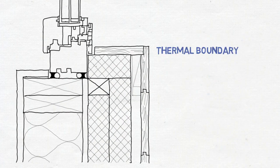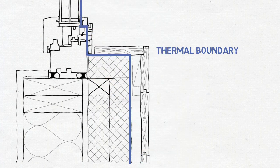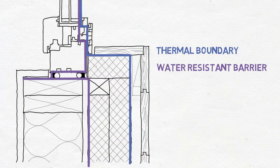The thermal boundary starts with the exterior insulation and goes across the window. The water resistant barrier is installed on the opening behind the exterior insulation and continuing up the window.